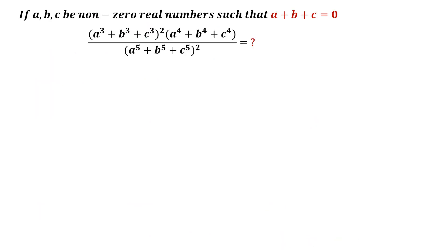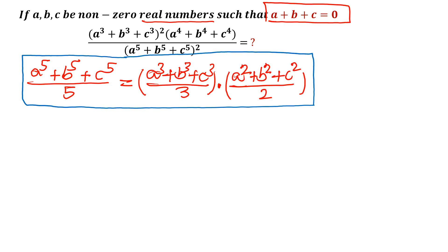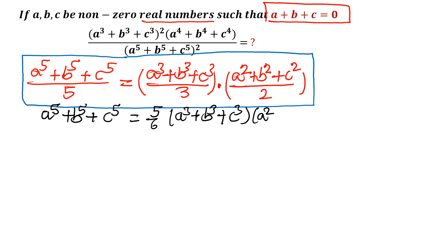Let us consider question number 2. A, B, C are non-zero real numbers and A plus B plus C equals 0. We have to find out the given expression. I will begin with one algebraic identity: A to the power 5 plus B to the power 5 plus C to the power 5. This one is over 5 — whole cube — B cubed C cubed over 3, times A squared plus B squared plus C squared. So A to the power 5 plus B to the power 5 plus C to the power 5 equals 5 over 6 times the sum of cubes, A cubed plus B cubed plus C cubed, times the sum of squares, A squared plus B squared plus C squared.